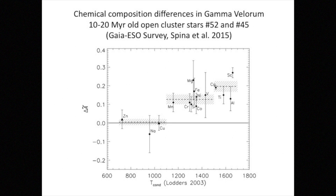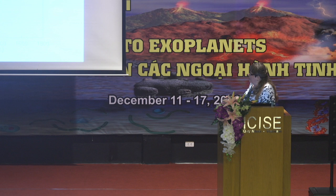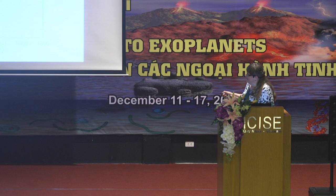In the open cluster Gamma Velorum, which is a young cluster, we found a star — number 45 — which, in comparison with another star, number 52, has differences in chemical elements. Here we plot the difference of chemical composition versus condensation temperature, and we see a similar gradient of abundances as seen in 16 Cygni and other stars which host planets.